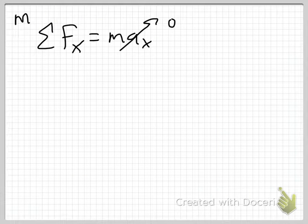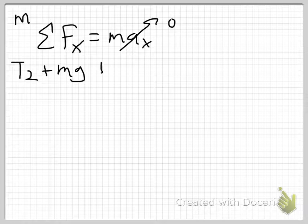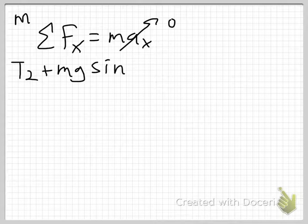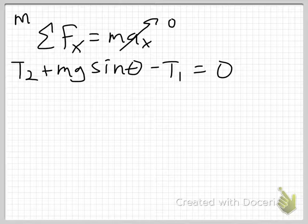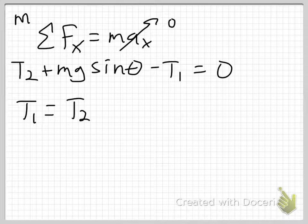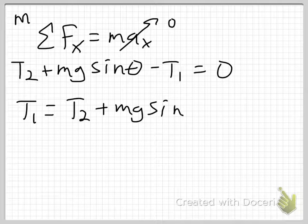So I'm going to write here, T2 plus mg sine, that's supposed to be an S, sine theta minus T1 is equal to 0. In which case, I can solve this expression for T1 pretty easily. T1 is just equal to T2 plus mg sine of theta. Okay?